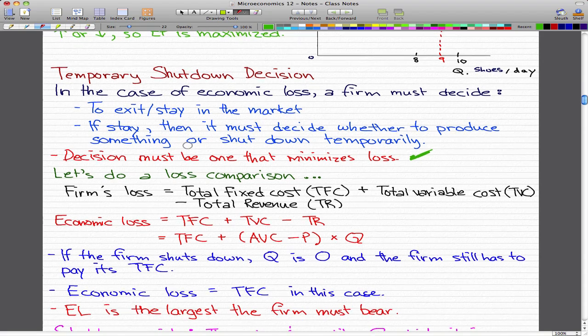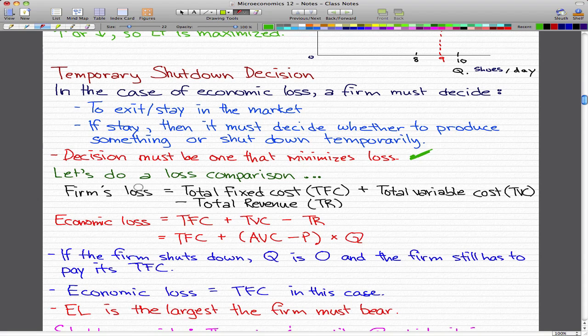Let's do a loss comparison. The firm's total loss is the total fixed cost (TFC), the cost that it will have to pay whether it's in operation or not, plus the total variable cost (TVC), which stems from operations, minus the total revenue (TR), which is the amount of money we make from our sales. All in all abbreviated, it's TFC plus TVC minus TR. TVC minus TR can be further broken down, and these equations can be simplified.